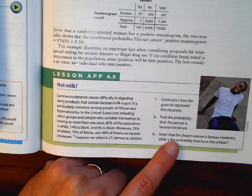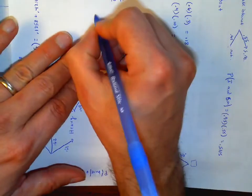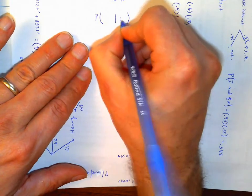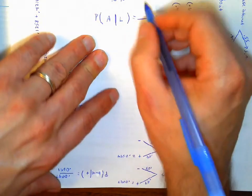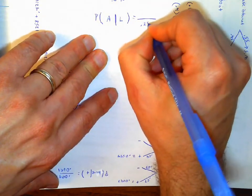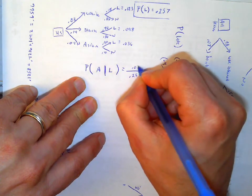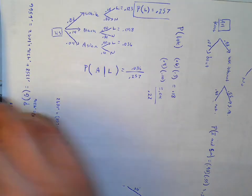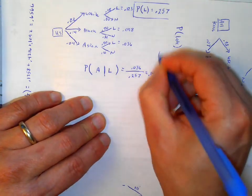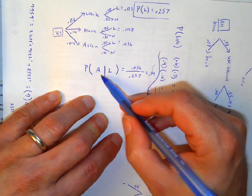Given that a person is lactose intolerant, what's the probability they are Asian? We look at all lactose intolerant people — that 25.7% of the population — and of those, how many are Asian? That was 0.036 out of 0.257, which gives about 14%. So if I pick someone and know they're lactose intolerant, there's about a 14% chance they're also Asian.